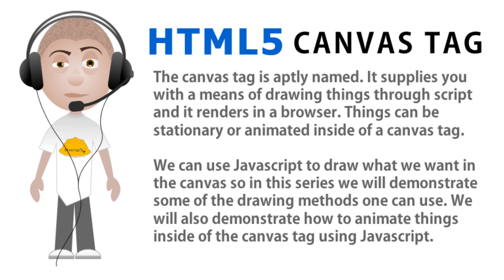The canvas tag is aptly named. It supplies you with a means of drawing things through script and it renders in a browser. Things can be stationary or animated inside of a canvas tag. We can use JavaScript to draw what we want in the canvas, and in this series we will demonstrate some of the drawing methods one can use, as well as how to animate things inside the canvas tag using JavaScript.